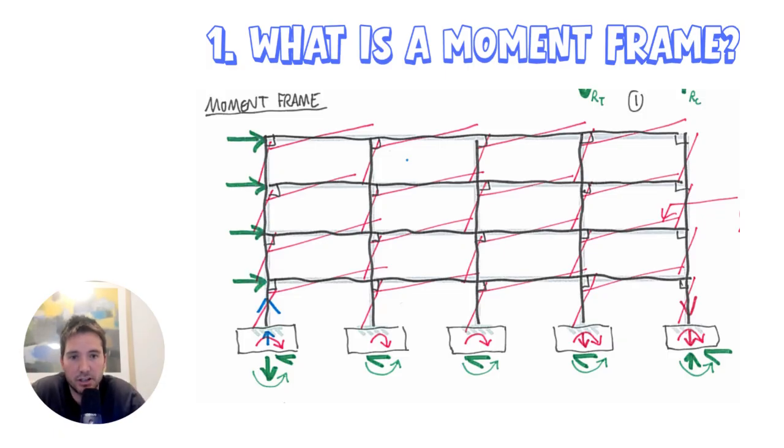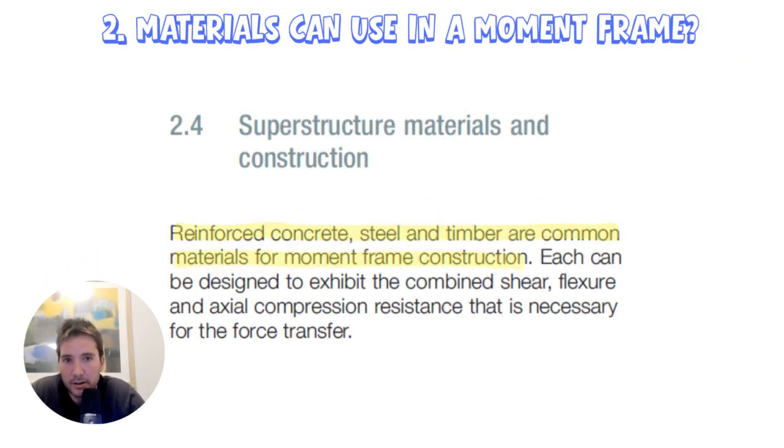So what materials can we use in a moment frame? Luckily we can pretty much use all the primary building materials, that being concrete, steel, and timber. You can create fixed joints between the beams and columns and have moment frames for all three of those materials.